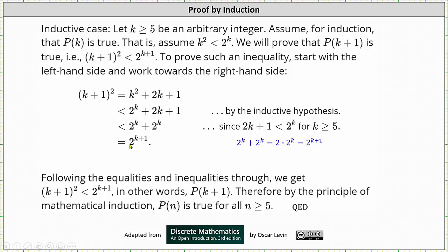Following the equalities and inequalities through, we get the square of the quantity k plus 1 is less than 2 to the power of k plus 1. In other words, P of the quantity k plus 1 is true. To summarize: the square of the quantity k plus 1 equals k squared plus 2k plus 1, which is less than 2 to the power of k plus 2k plus 1, which is less than 2 to the power of k plus 2 to the power of k, which equals 2 to the power of k plus 1. Therefore, the square of k plus 1 is less than 2 to the power of k plus 1.